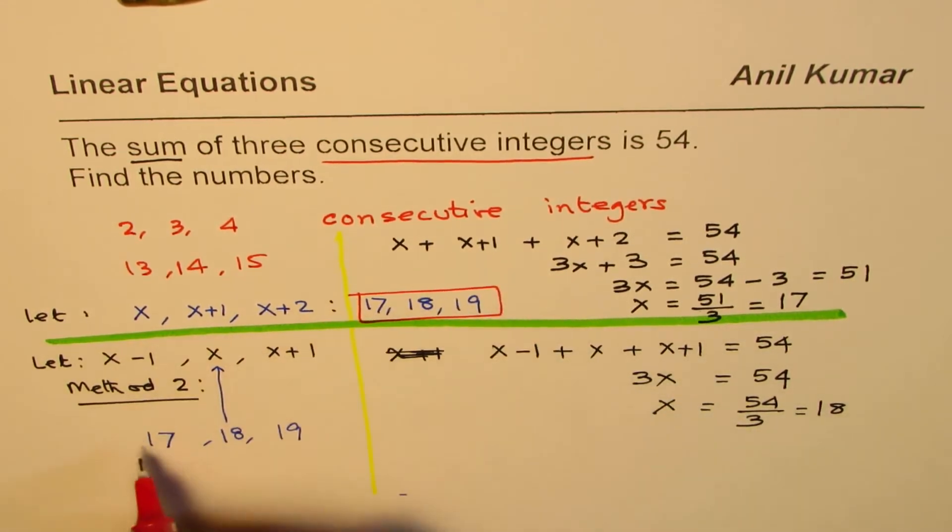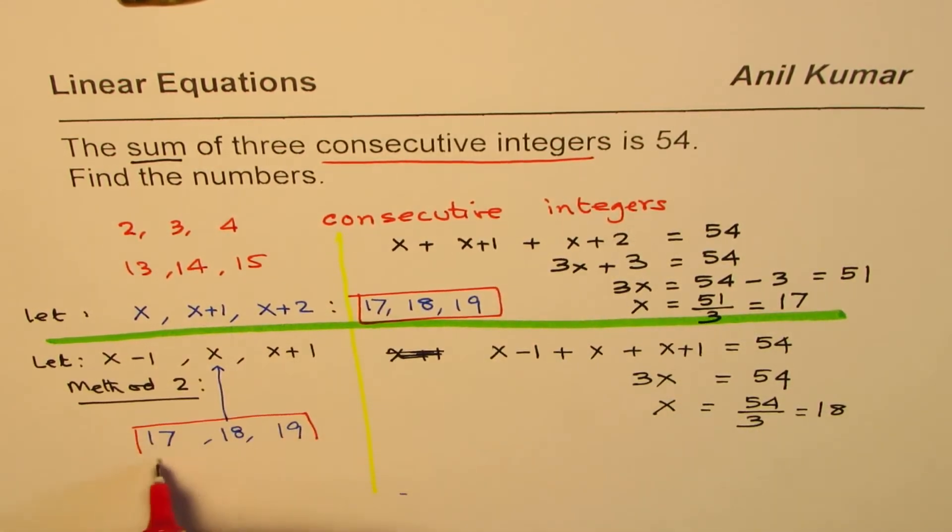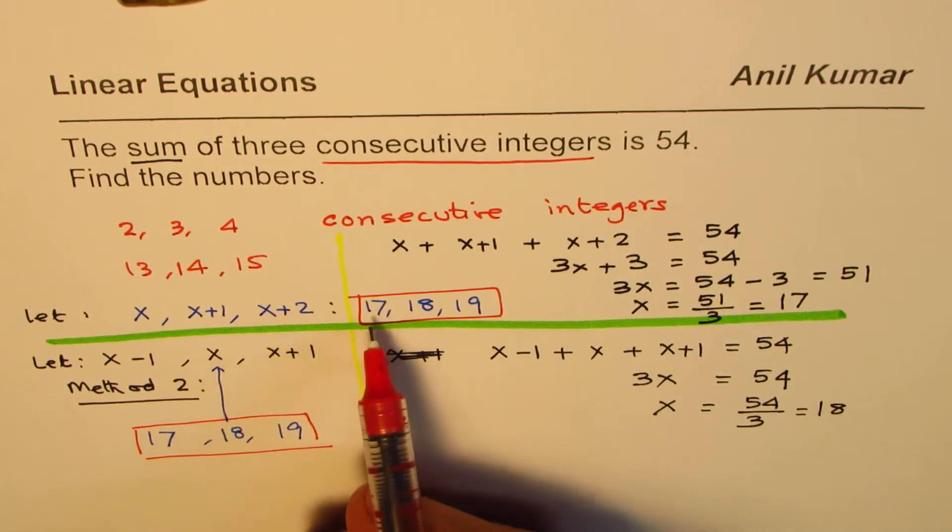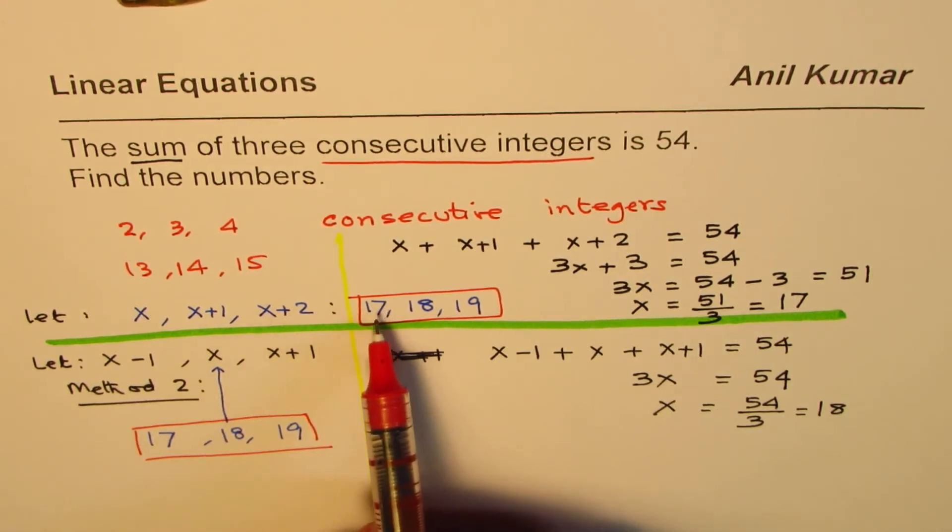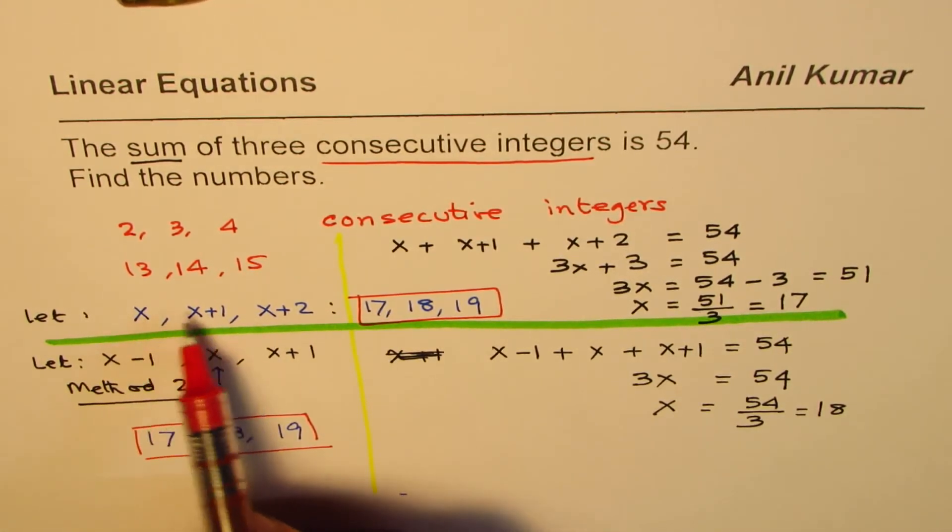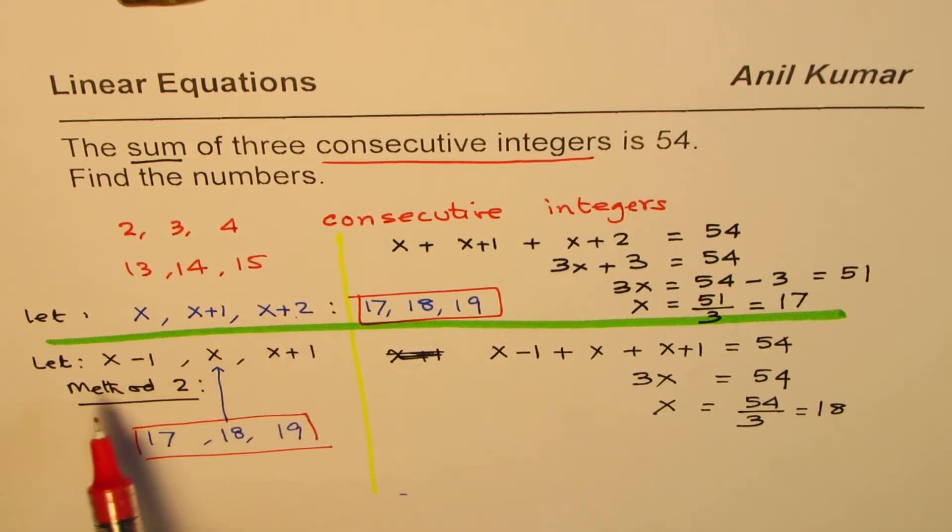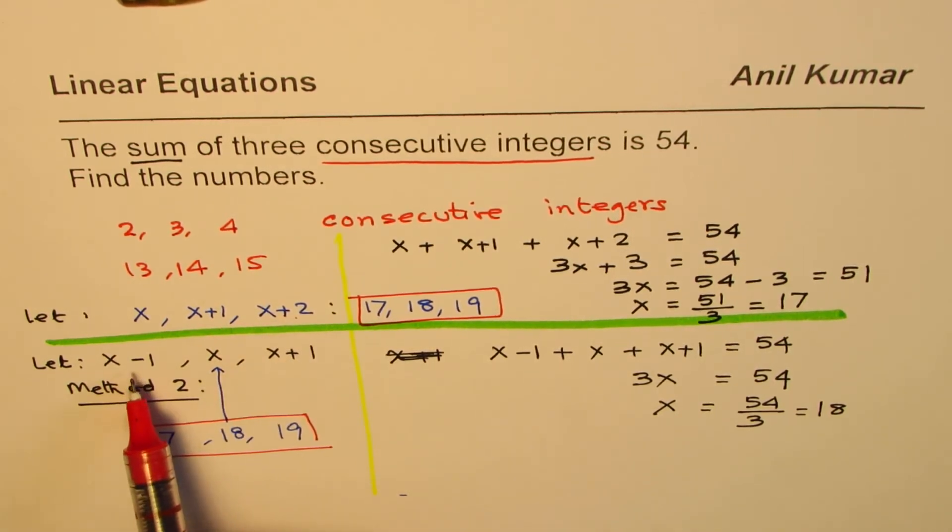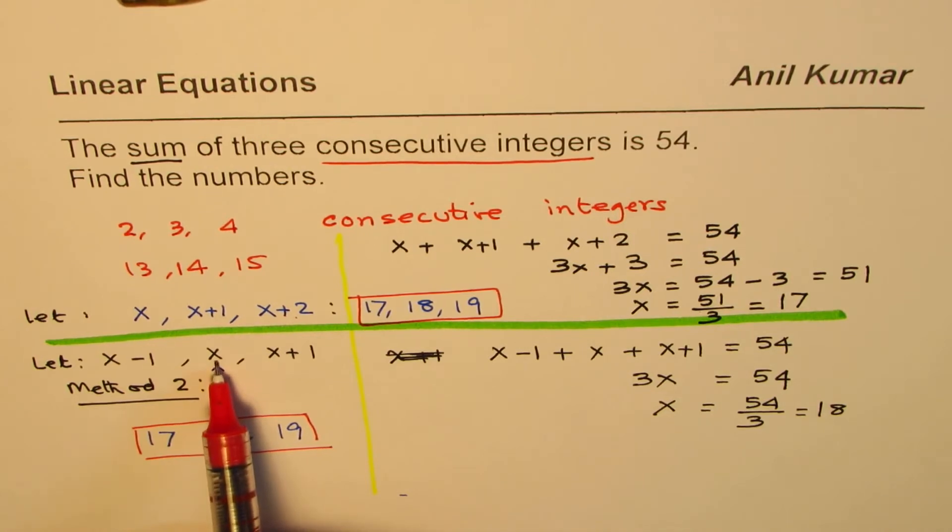17, 18, 19. The only difference is, in the first case, I defined my variable as the first number and then added one each time to get the consecutive numbers. And in the second case, I defined my number as a center number and then took away one and added one, getting my three numbers.